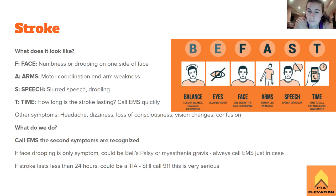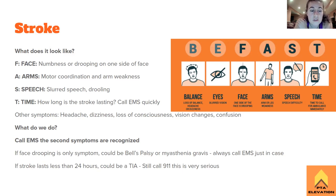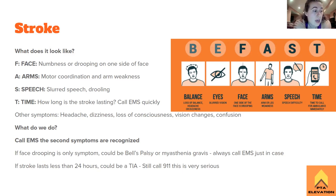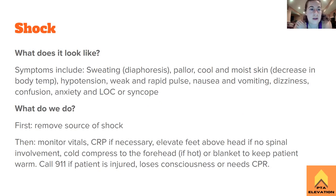Even if only the face is drooping, still call 9-1-1, but be aware of differential diagnoses: an exacerbation of myasthenia gravis (which resolves quickly with rest) or Bell's palsy (facial nerve paralyzed on one side). Always call EMS if it looks like a stroke. If stroke symptoms last less than 24 hours, it's called a transient ischemic attack (TIA) — still call 9-1-1 even if symptoms resolve. It's very serious.